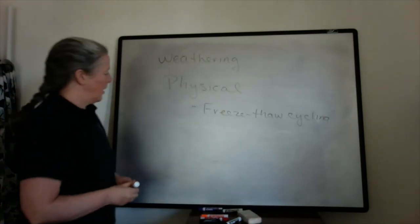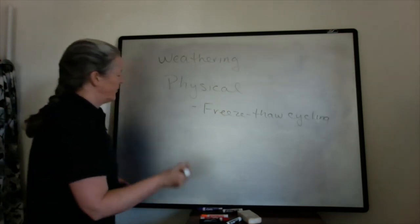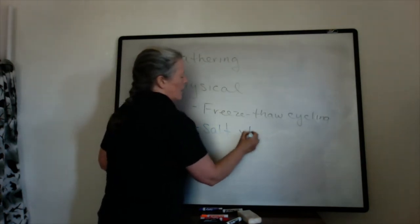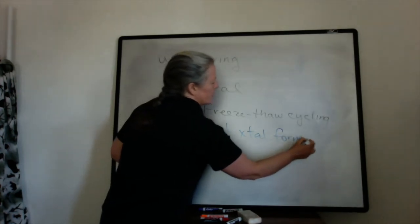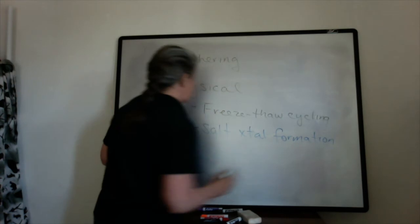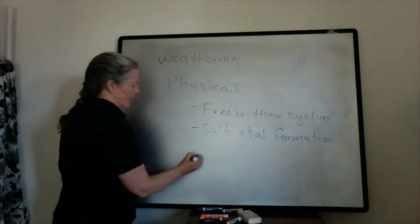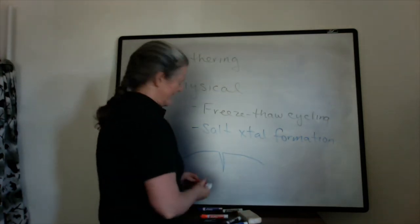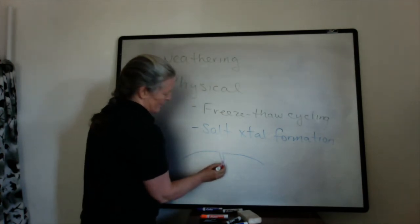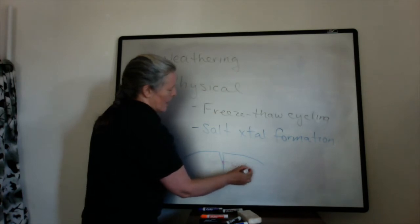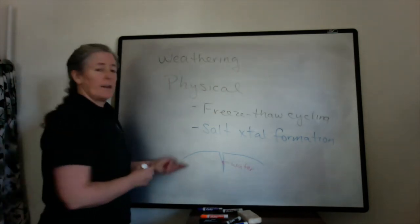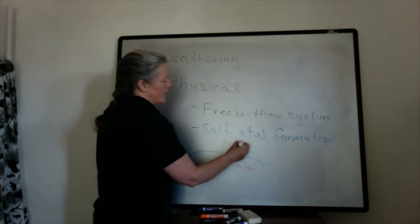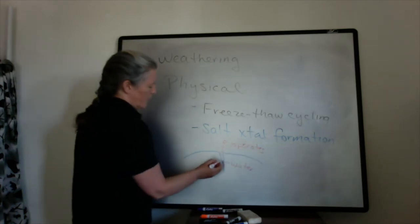So another way that you can get physical weathering is with salt crystal formation. This is very similar to the freeze-thaw cycling in that in this particular case, you have a rock with a fracture in it. And my water is going to be a different color this time. So you end up with water in here. And if there are ions in that water, say you're near the ocean, the water evaporates. And as it evaporates, salt crystals form.